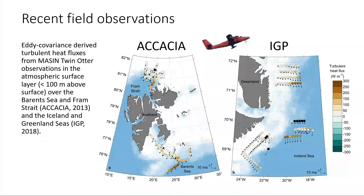With the goal of improving our understanding and capacity to model these turbulent fluxes over sea ice in the Marginal Ice Zone, we've obtained a large number of additional observations in the Arctic surface layer from two different field campaigns: the Acacia field campaign from 2013 around Svalbard, and the IGP field campaign from 2018 in the Iceland and Greenland Seas. These observations came from aircraft measurements taken using the British Antarctic Survey Masin Twin Otter aircraft.